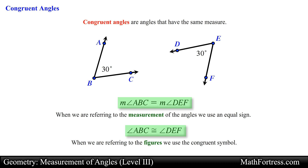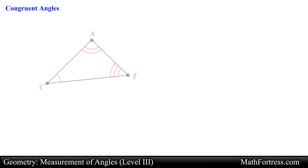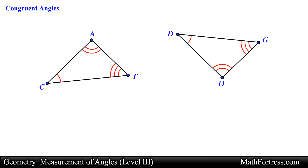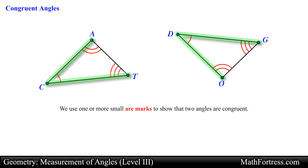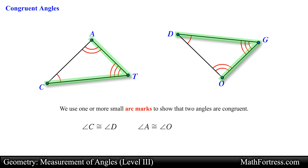The definition of congruent angles tells us that these two statements are equivalent and we can use them interchangeably. Just like tick marks show that two line segments are congruent, we use one or more small arc marks to show that two angles are congruent. For example, in the figure shown, triangle CAT and triangle DOG have various arc marks: angle C and angle D have matching single arc marks, angle A and angle O have matching double arc marks, and angle T and angle G have matching triple arc marks — so each pair of angles is congruent.